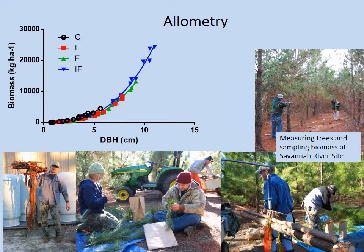Allometry studies how parts of an organism scale with its size. We use allometry, or allometric relationships, to estimate hard-to-measure quantities from easily measured variables. For instance, we can estimate dry biomass of a tree from its diameter, or estimate the leaf area of a tree from its sapwood area.